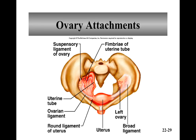Ovary attachments. The ovaries in general are small — about three and a half centimeters long, two centimeters wide, and about a centimeter thick. They're found in the lateral walls of the pelvic cavity. Their descent is similar to the testes, although they don't descend as far. There's a broad ligament, and the broad ligament holds the ovaries in place. The broad ligament is just a fold of the peritoneum, but it also contains lots of blood vessels and nerves for the ovaries.